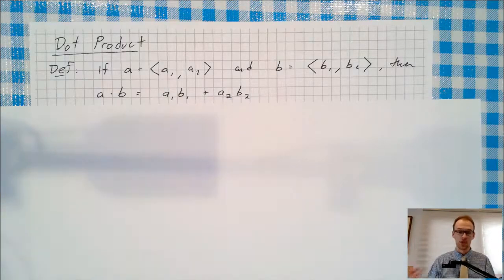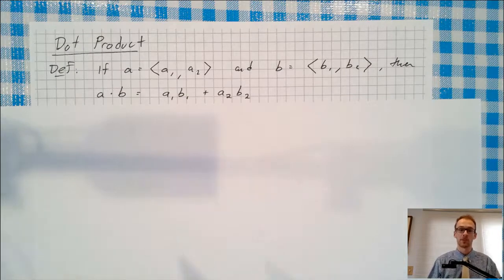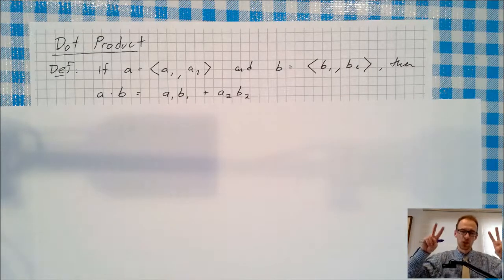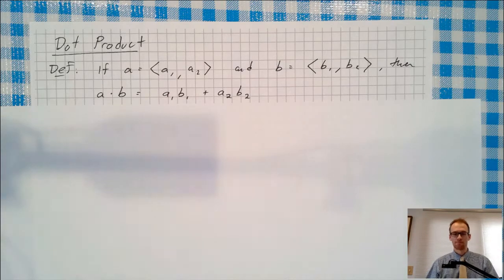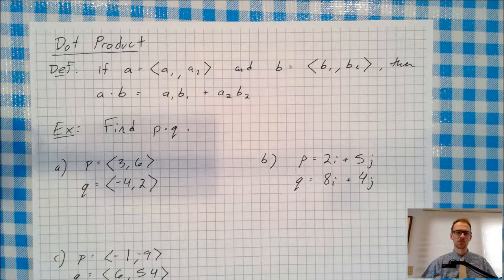So you'll get just a number. When you take the dot product of two vectors, the answer is just a number, or what we call a scalar when we're in the vector world. Let's do an example of this. Let's do a few examples of this.